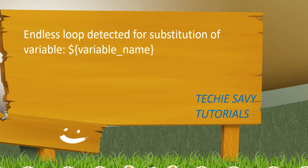Welcome to the TechieCV tutorial. Today we will discuss one of the errors which comes in Pentaho: endless loop detected for substitution of variable, followed by that variable name.